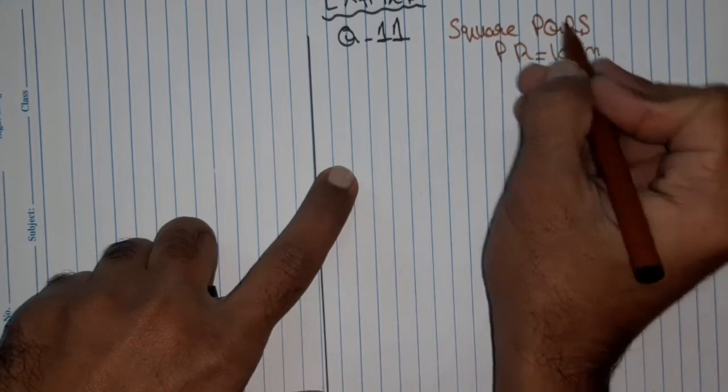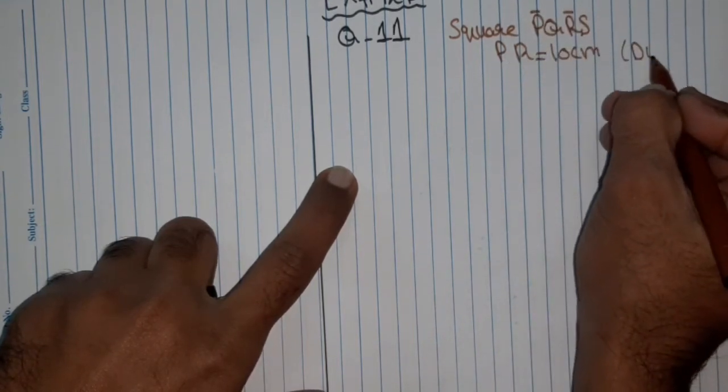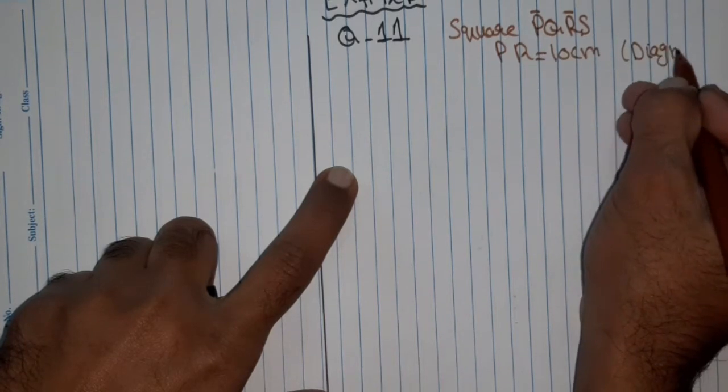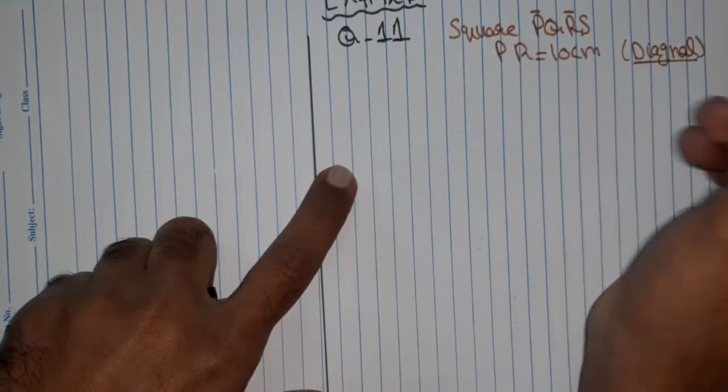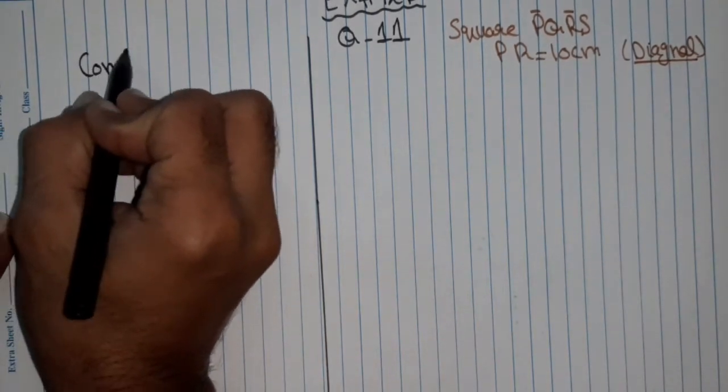So PR is diagonal, the diagonal is given. We have to construct using the diagonal that is given. Let's check the construction steps. First of all, construction steps.